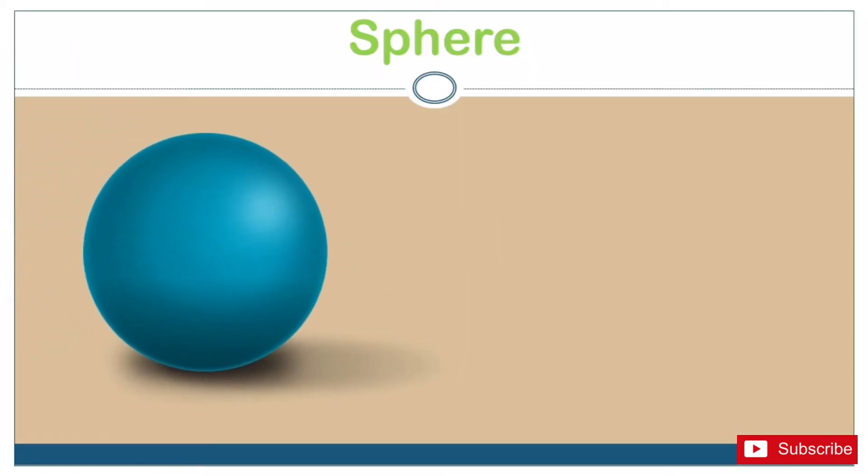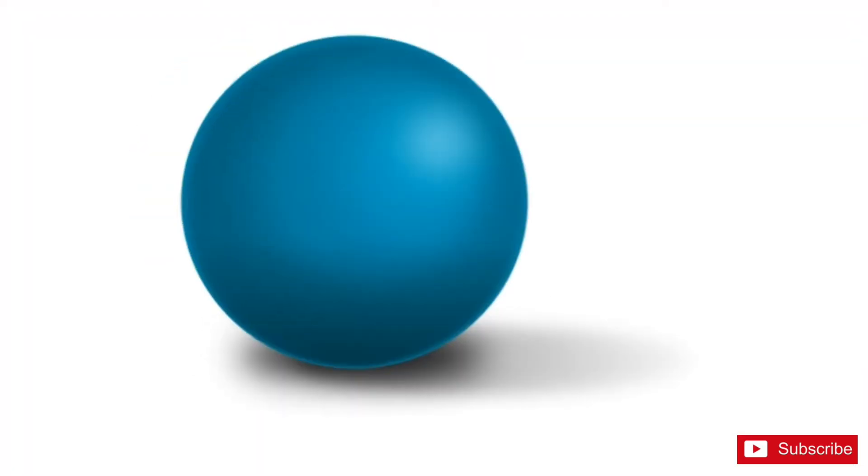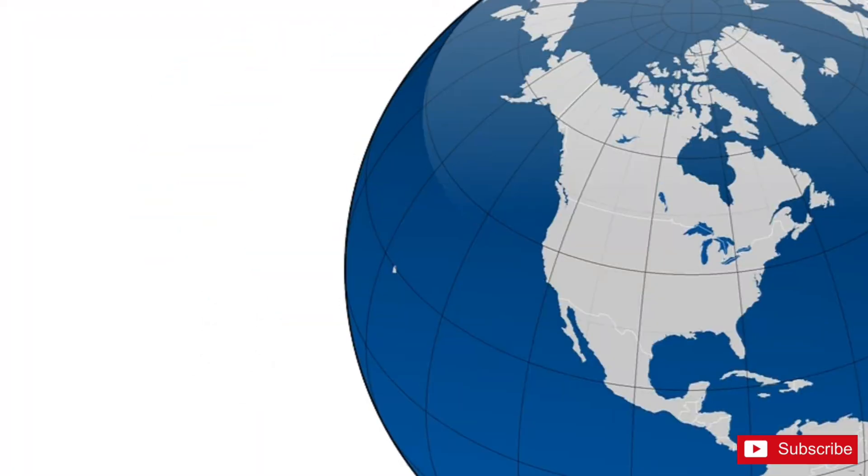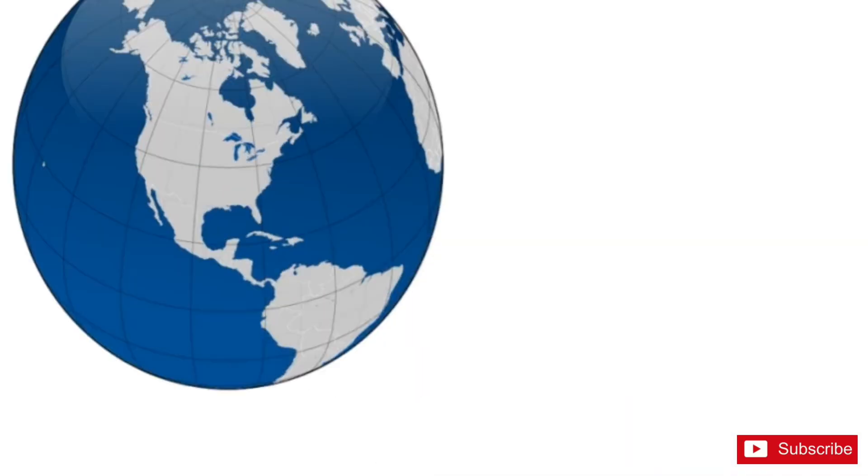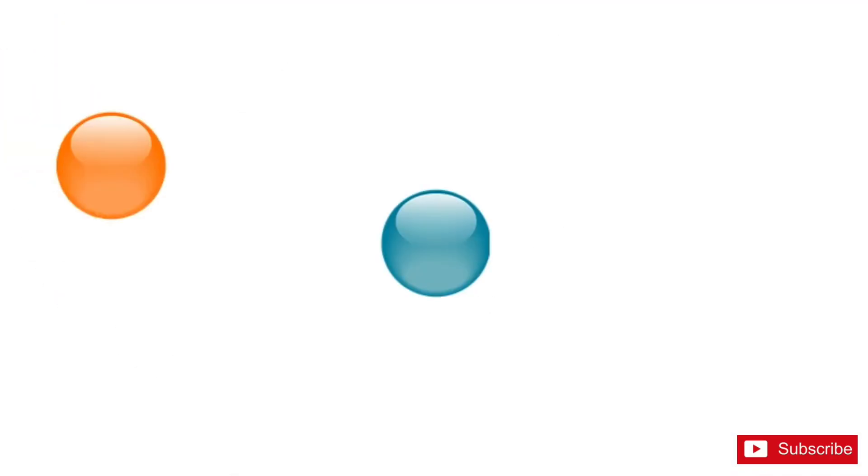This is a sphere. A sphere has one curved face. It doesn't have any edges or any vertices. These objects are spheres. A sphere can roll on its curved face.